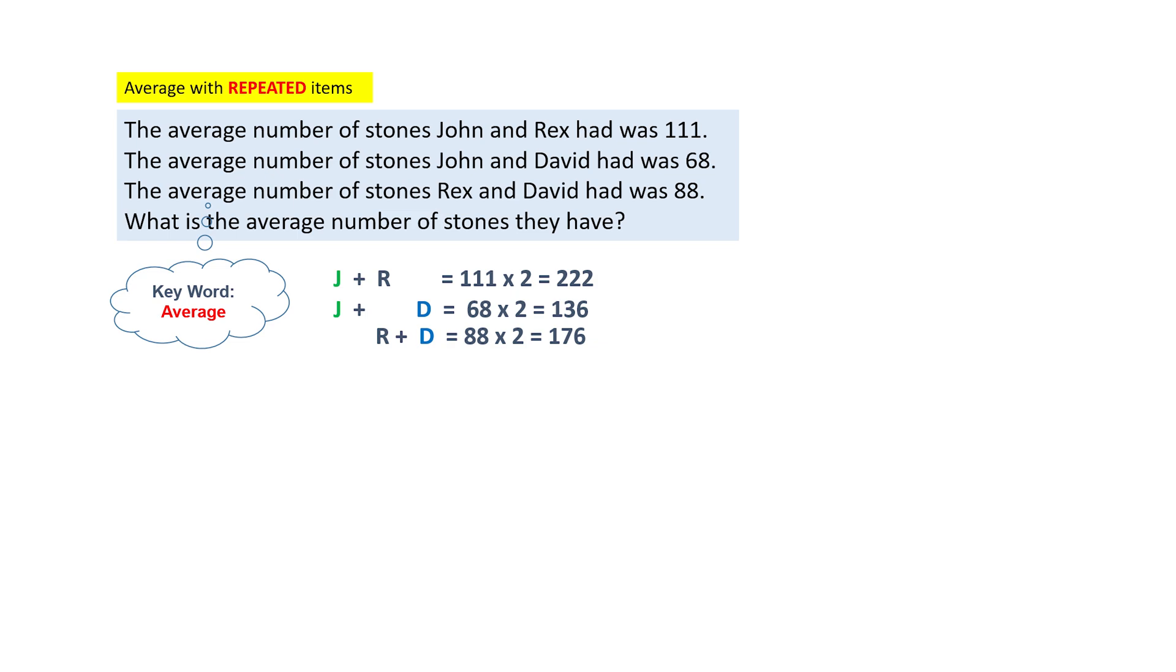So let's add up the total: 222 plus 136 plus 176. So this gives you a total of 534. Bear in mind, there are two sets of John, two sets of Rex and two sets of David's stones in this total.